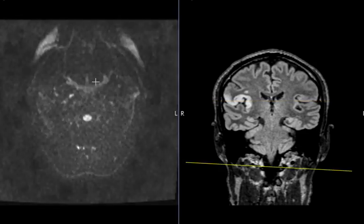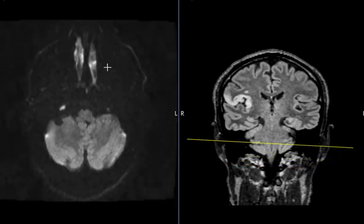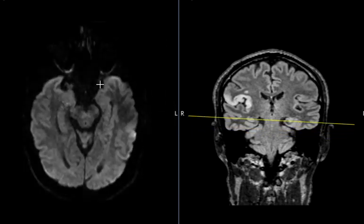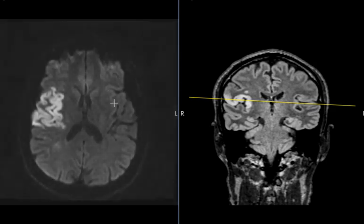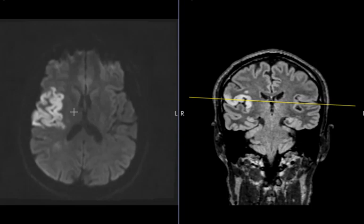If people have strokes or ischemic accidents, this diffusion sequence will show the abnormality as very bright. Tumors and other pathologies won't show it nearly as bright. We see this really prominent increased signal on the diffusion sequence, which is consistent with ischemia or an infarction of the brain. So this patient has had a right middle cerebral artery territory infarction — this is the MCA or middle cerebral artery territory here.